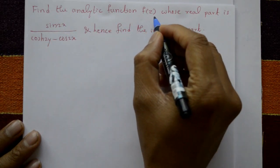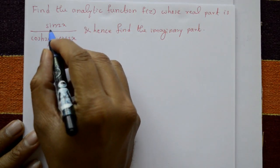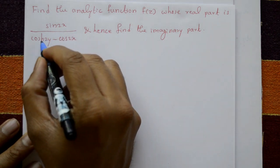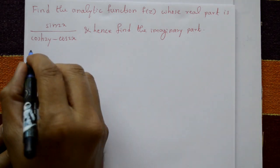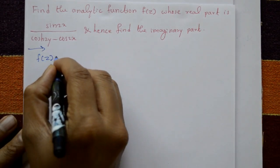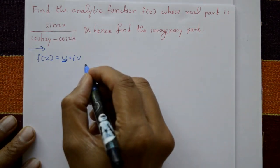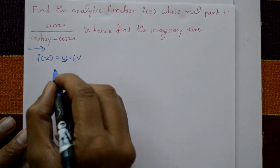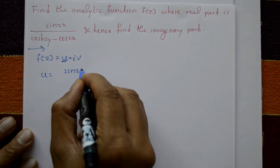Find the analytic function f(z) whose real part is sin(2x) / (cosh(2y) - cos(2x)), and hence find the imaginary part. Solution: f(z) = u + iv, where u = sin(2x) / (cosh(2y) - cos(2x)).